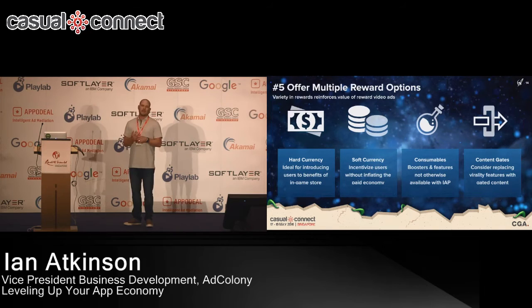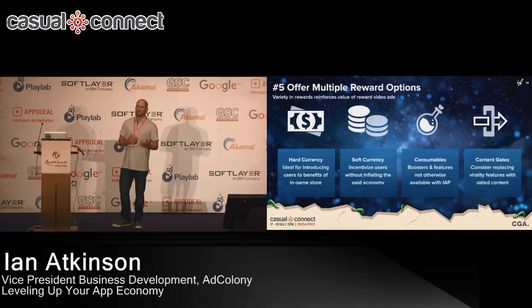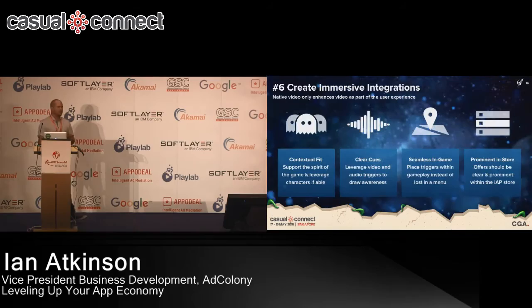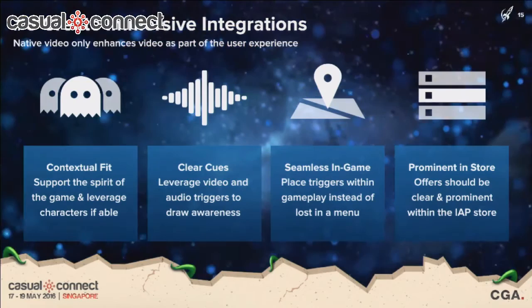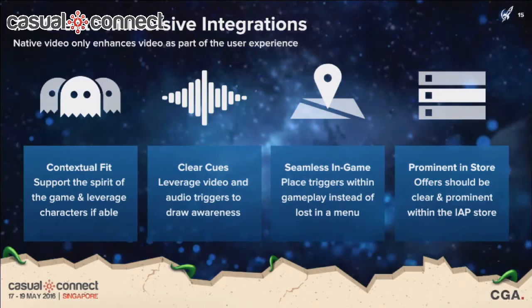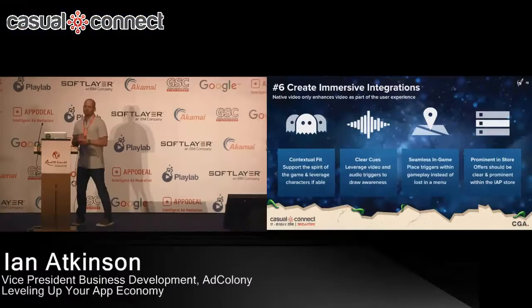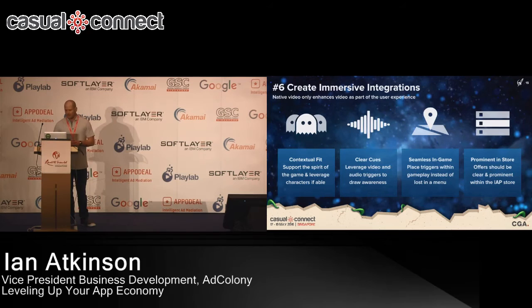Content gates are another great way to use rewarded video. If you have an endless runner and at the end of a play session the player doesn't have enough energy, it's a great time to put in a rewarded video to extend the session. Each time you get them to stay in the game, the more attached they get to it, and potentially the more opportunities there are to drive them to the IAP side. When thinking about integrations, the more you make rewarded video feel a part of the game, the more impactful it's going to be. Contextual fit is very important — making clear cues so the player knows exactly what they're getting and where to go to get it. Always having something available in the store is also a good spot, because they know they can at least get something free, and once they're in the store there may be an opportunity for a purchase.